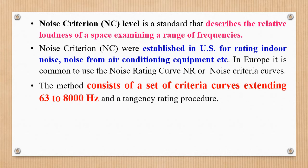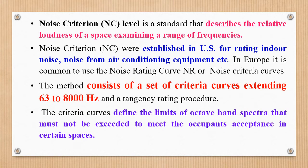The method consists of a set of criteria curves extending from 63 to 8000 Hz and the tendency rating procedures. The criteria curves define the limits of octave band spectra that must not be exceeded to meet occupant acceptance in certain spaces. This criteria has been initially used for indoor air.